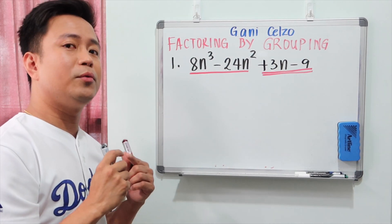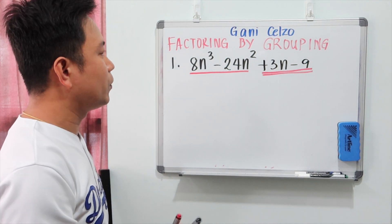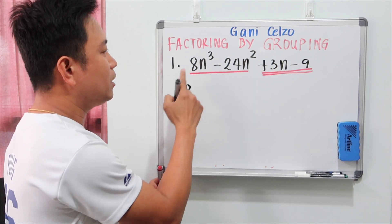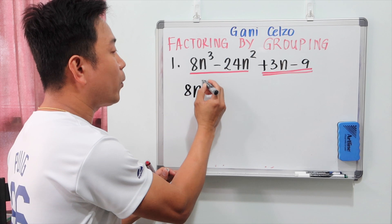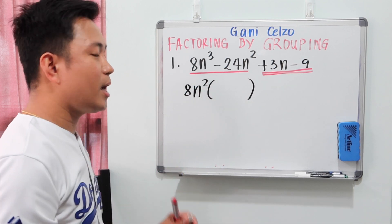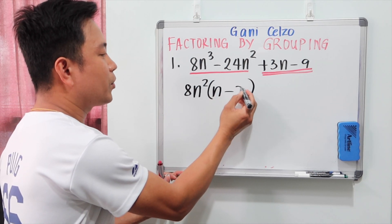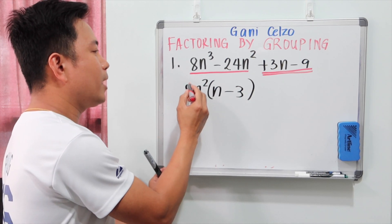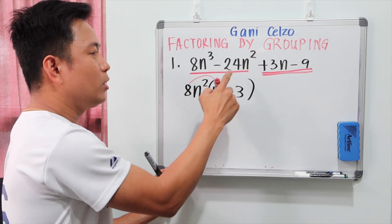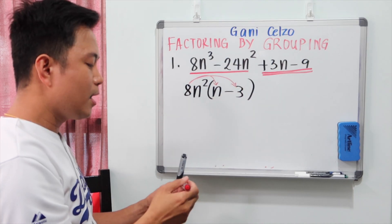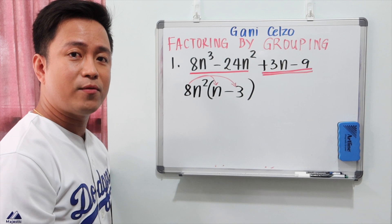Next we need to find the GCF, or greatest common factor, for each group. The greatest common factor for the first group is 8n squared, because 8 can divide 8 and negative 24, and the smallest power for n is squared. So we factor out 8n squared, and inside the parentheses we have n minus 3, because 8n squared times n gives 8n to the third, and 8n squared times negative 3 gives negative 24n squared.